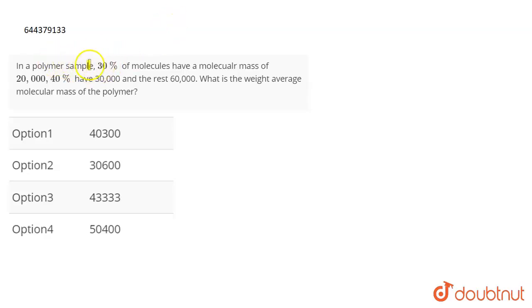The question is: In a polymer sample, 30% of the molecules have a molecular mass of 20,000, 40% have 30,000, and the rest have 60,000. What is the weight average molecular mass of the polymer?